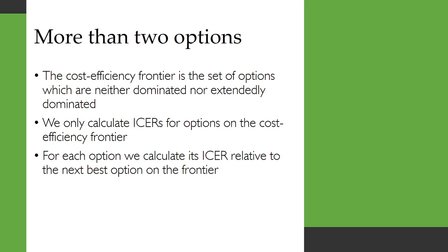The cost-efficiency frontier is the set of options which are neither dominated nor extendedly dominated, and we only calculate ICERs for options that are on the cost-efficiency frontier. For each of those options, we calculate its ICER relative to the next best option on the frontier in terms of benefits, or to the next cheapest option.